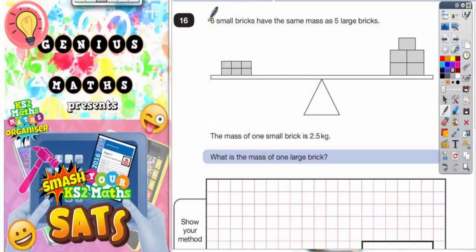Question 16. Six small bricks, which are here, have the same mass as five large bricks, which are on this side here. The mass of one small brick is 2.5 kilograms. What is the mass of one large brick?